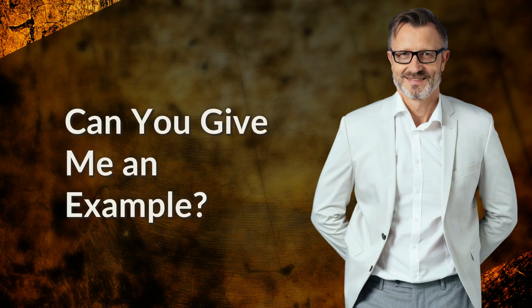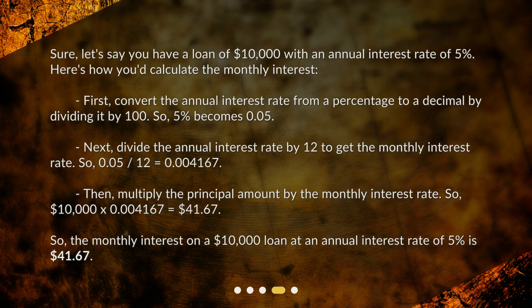Can you give me an example? Sure. Let's say you have a loan of $10,000 with an annual interest rate of 5%. First, convert the annual interest rate from a percentage to a decimal by dividing it by 100 — so 5% becomes 0.05.